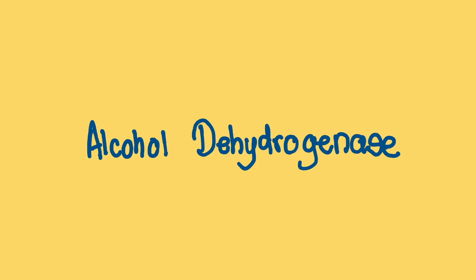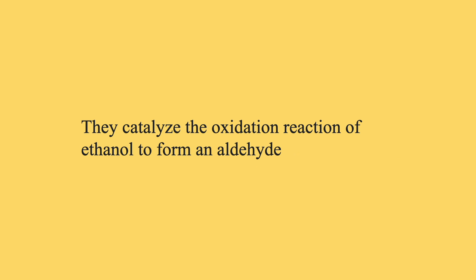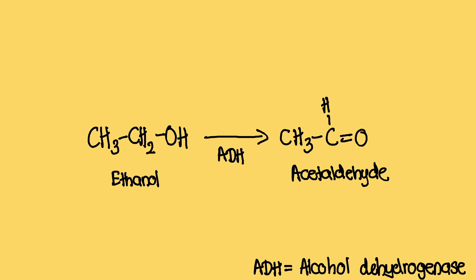Take alcohol dehydrogenase as an example. Alcohol dehydrogenase is an enzyme that catalyzes the oxidation reaction of alcohol to form an aldehyde. Since ethanol is being oxidized to acetaldehyde, there needs to be a reduction reaction as well — after all, the enzyme is called an oxidoreductase enzyme. Therefore, cofactors like NAD+ and NADP+ get involved.